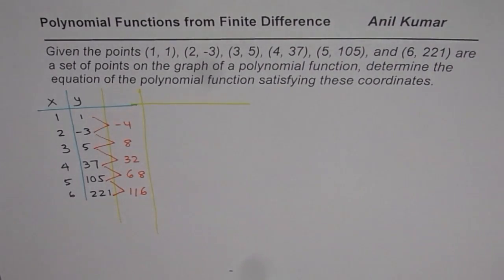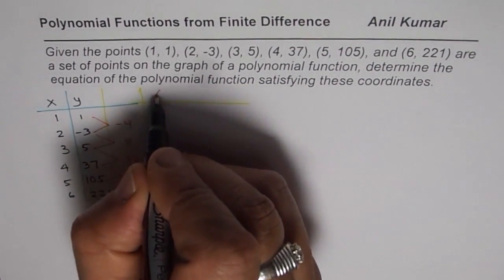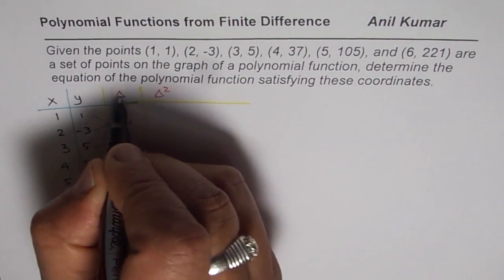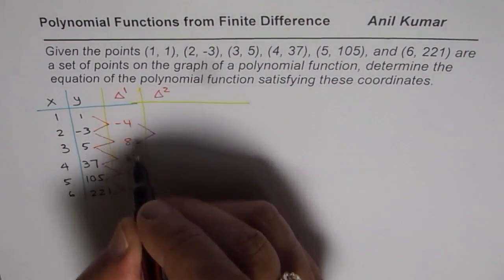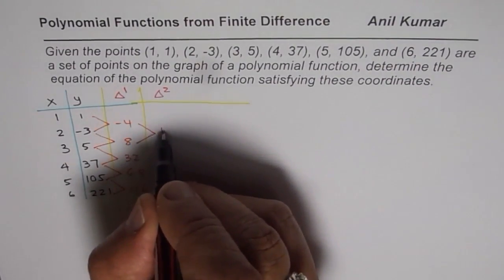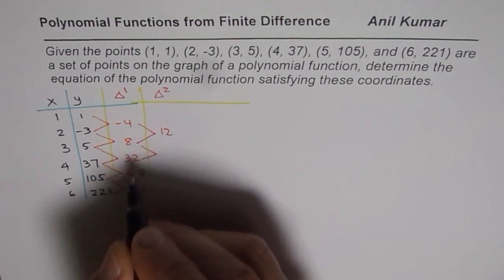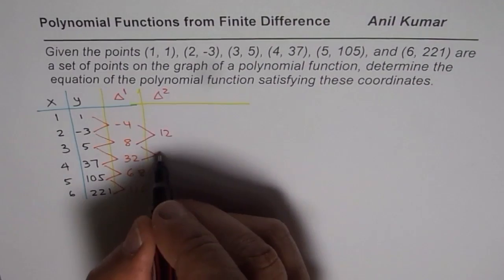So what we have here is now the second finite difference. We will do 8 minus -4 is 12, 32 minus 8 is 24.